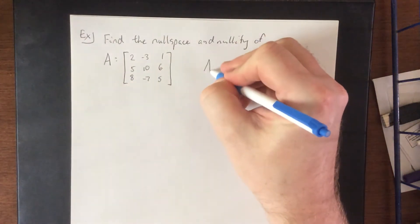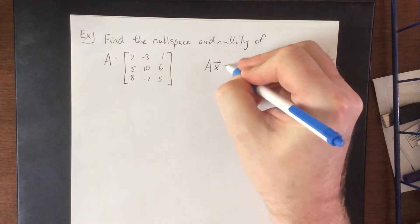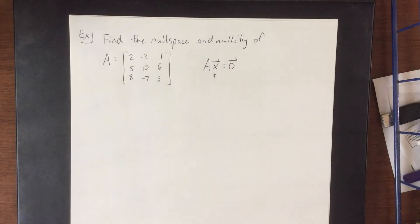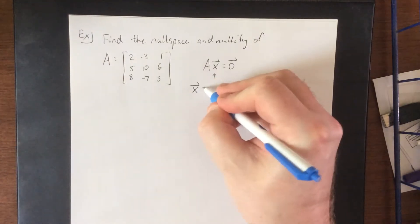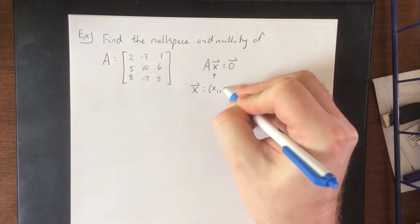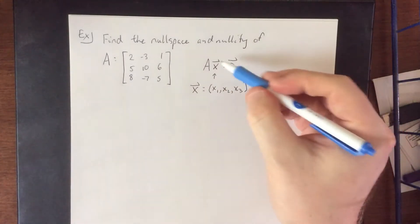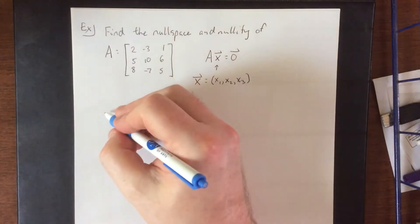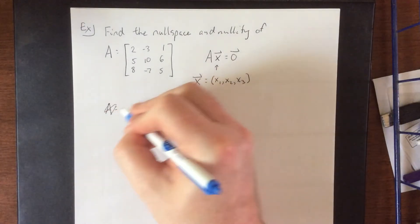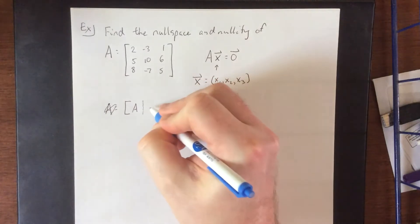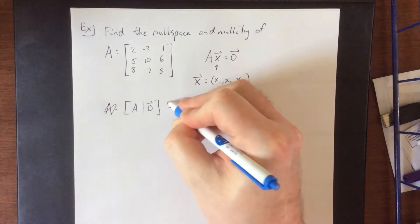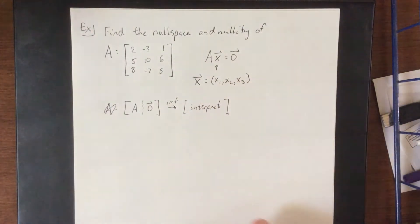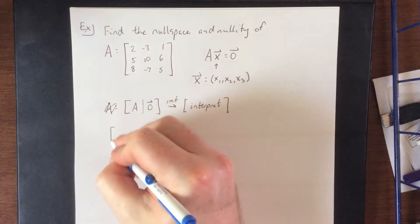So as a quick reminder, the definition of the null space of the matrix is going to be the set of all x's such that A times x is equal to 0. Now with that in mind, this is done relatively straightforward. First thing we do is figure out the appropriate size of x and it's going to have to be a vector in R3.